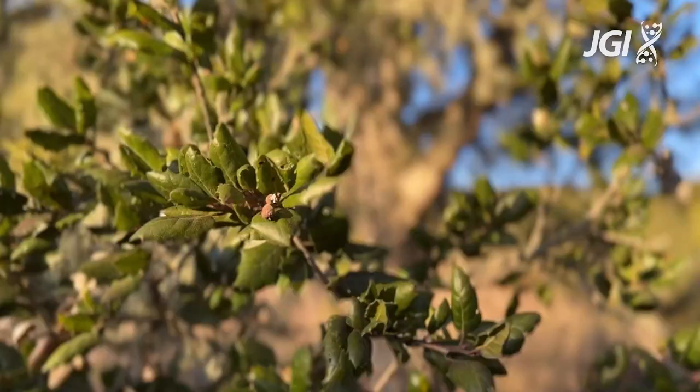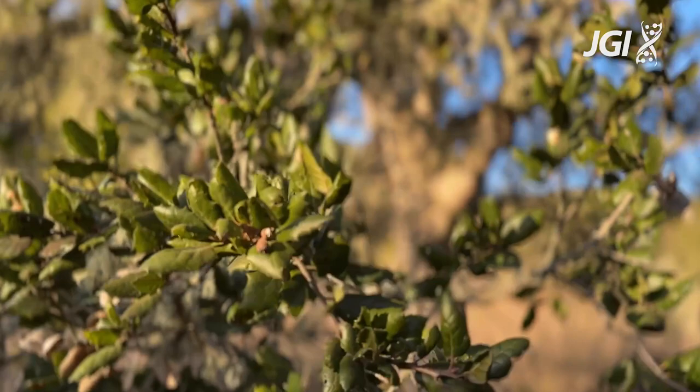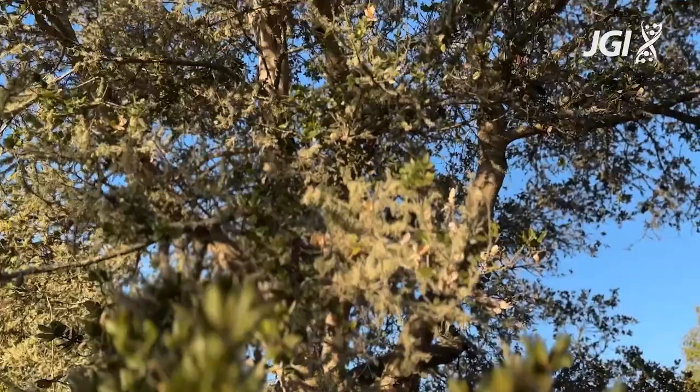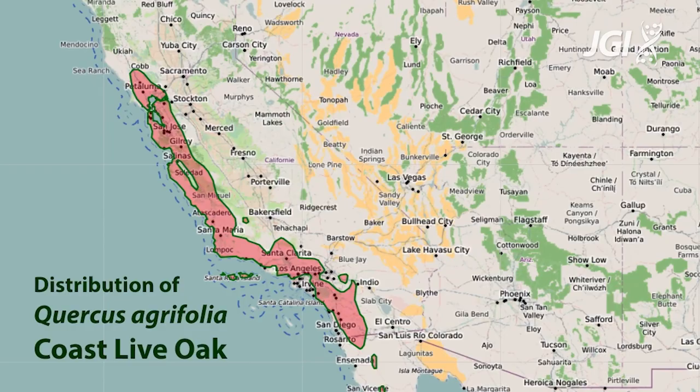Phytophthora in Greek means plant destroyer, and that gives an idea of how aggressive and lethal these pathogens can be, both in forests and in agricultural systems. This is Coastal Live Oak, one of the most iconic trees in California landscapes. It is an extremely drought-tolerant tree, and for that reason it has played a pivotal role in the resilience of coastal ecosystems all the way from Baja California to Northern California.